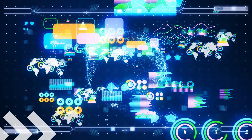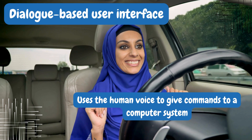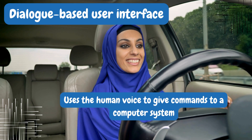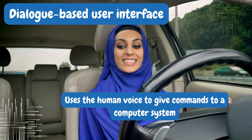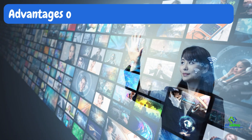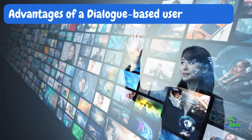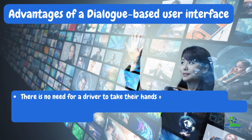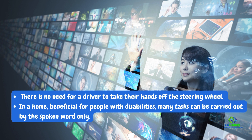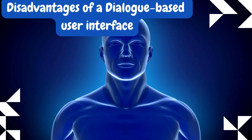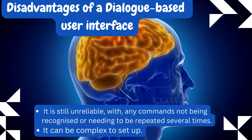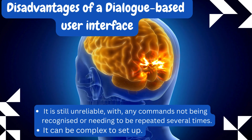The third type of user interface is the Dialog-Based User Interface, which uses the human voice to give commands to a computer system. An example of its use is in some luxury modern cars, where voice activation is used to control devices such as in-car entertainment systems or satellite navigation systems. Advantages: 1. There is no need for a driver to take their hands off the steering wheel. 2. In a home, it is beneficial for people with disabilities, as many tasks can be carried out by the spoken word only. Disadvantages: 1. It is still unreliable, with commands not being recognized or needing to be repeated several times. 2. It can be complex to set up.